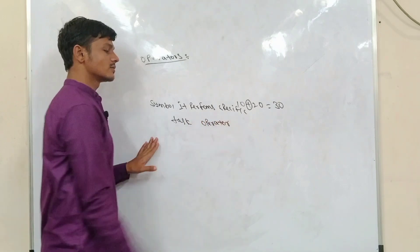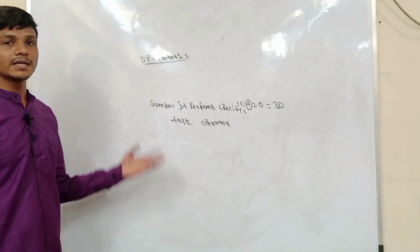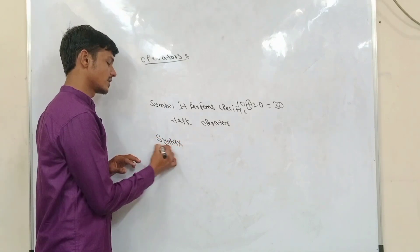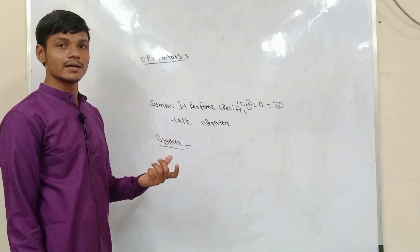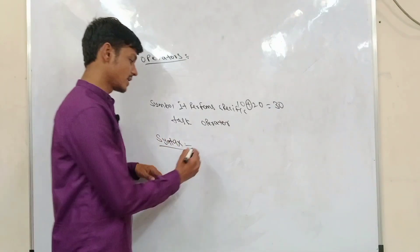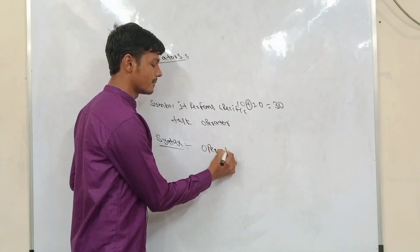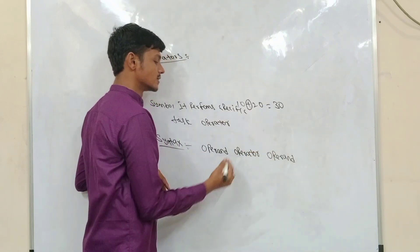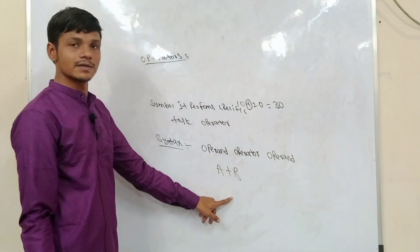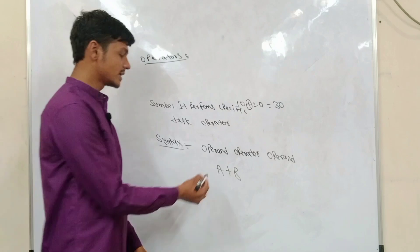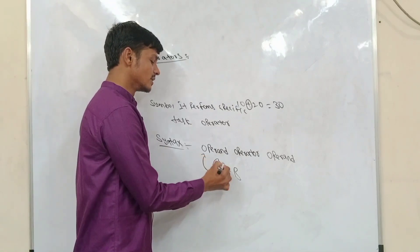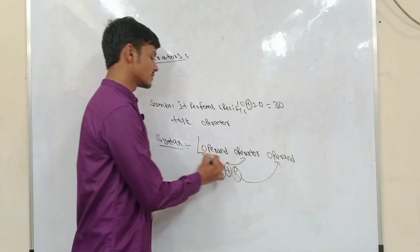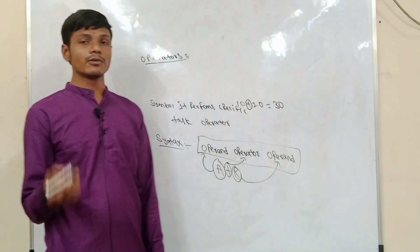Now, what is the syntax of an operator? In Java, every statement follows a syntax. The syntax of an operator is: operand operator operand. For example, a plus b, where a is equal to some value and b is equal to 10. Here 'a' is an operand, 'plus' is the operator, and 'b' is another operand.